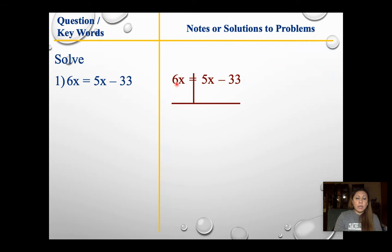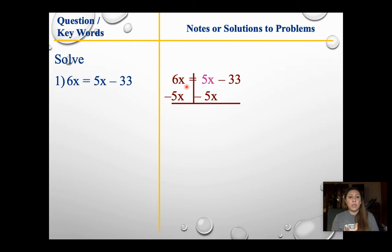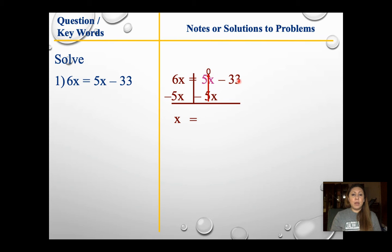I'm going to look at what's in common — there's a 6x and a 5x. Which one is greater? The 6. So I want to move the 5 over to the other side. I have a positive 5x, so I'm going to subtract 5x from both sides. I could move the 6 over, but then I'd have to deal with negatives. 6 minus 5 gives me just 1x, so I'll leave it as x. My 5x's cancel, and I bring down negative 33. That's our final answer — simple.